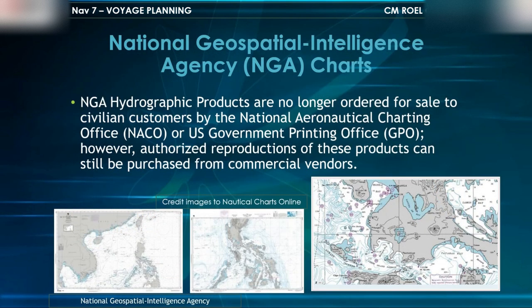National Geospatial Intelligence Agency or NGA charts: NGA Hydrographic Products are no longer ordered for sale to civilian customers by the National Aeronautical Charting Office or NACO, or the U.S. Government Printing Office or GPO. However, authorized reproductions of these products can still be purchased from commercial vendors.